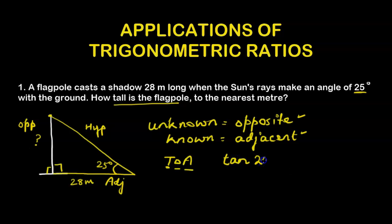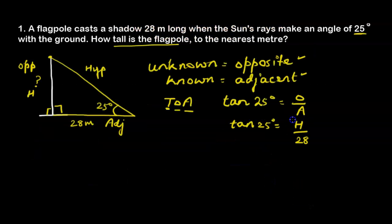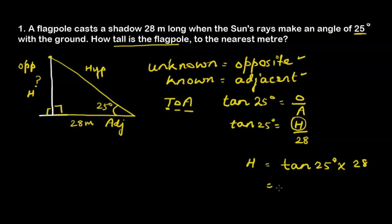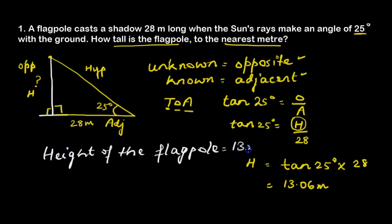We write tan 25° = opposite over adjacent. The opposite is the height h that we are looking for, and the adjacent is 28. So h = tan 25° × 28, which equals 13.06 meters. Since we are asked to round to the nearest meter, the height of the flagpole is 13 meters.